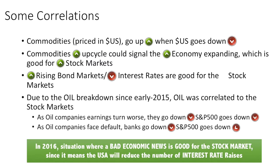Here are some correlations I often see in the market. Commodities like gold, dairy products, and oil are priced in US dollars, so commodities go up when the US dollar goes down. During periods of expanding economy, countries will buy commodities to produce manufacturing output, so a commodity upcycle could also signal the economy expanding — and this is very good for stock markets. We also know that rising bond markets mean lower interest rates, and rising bond markets with lower interest rates are actually good for the stock markets.